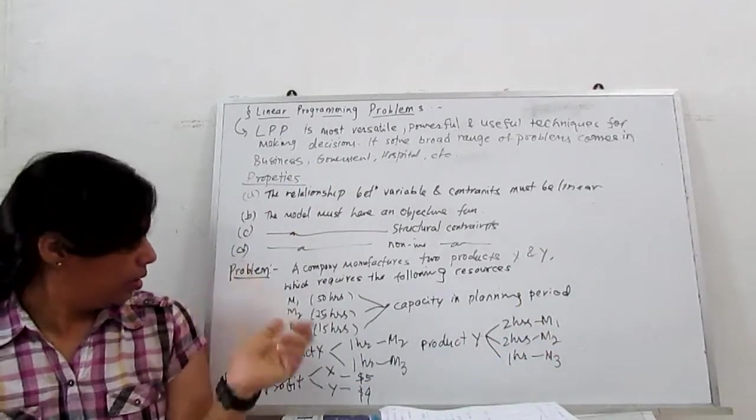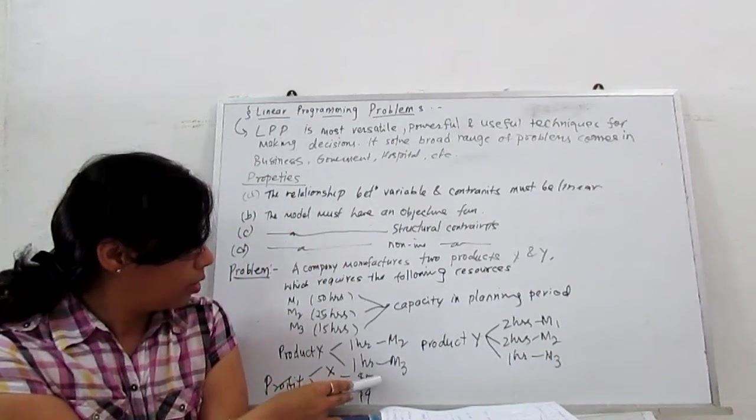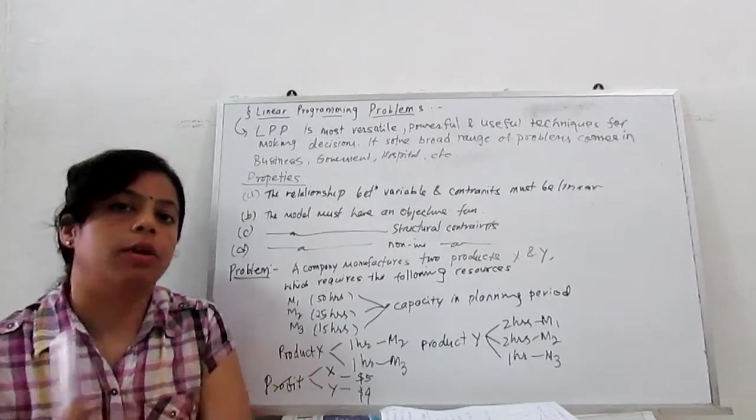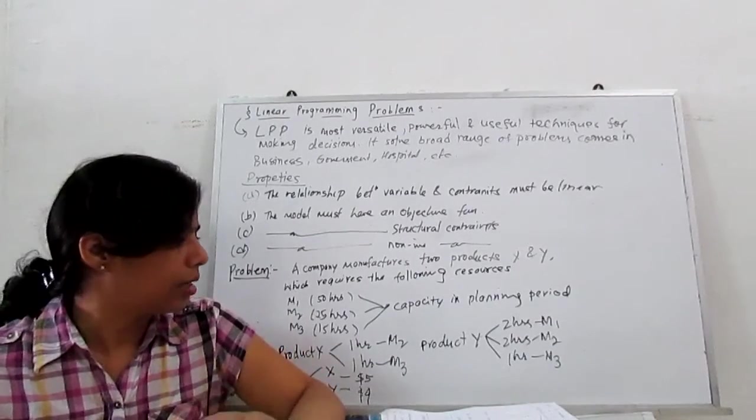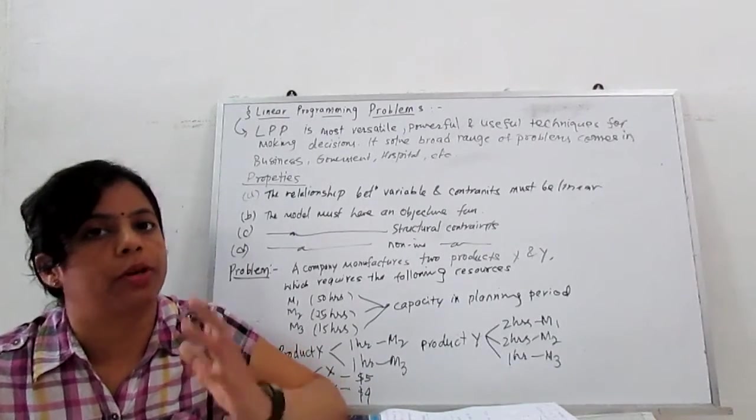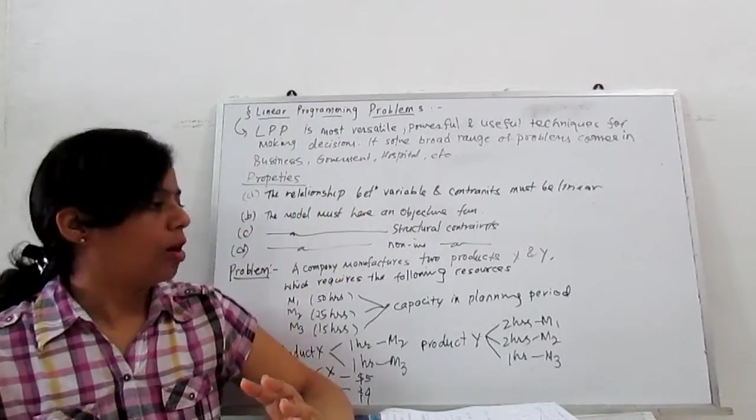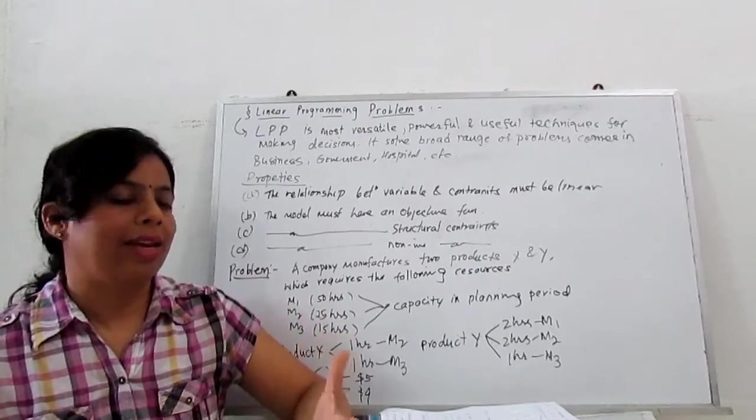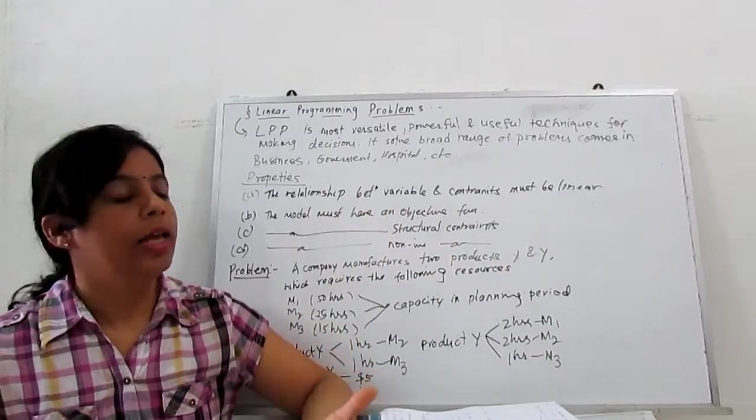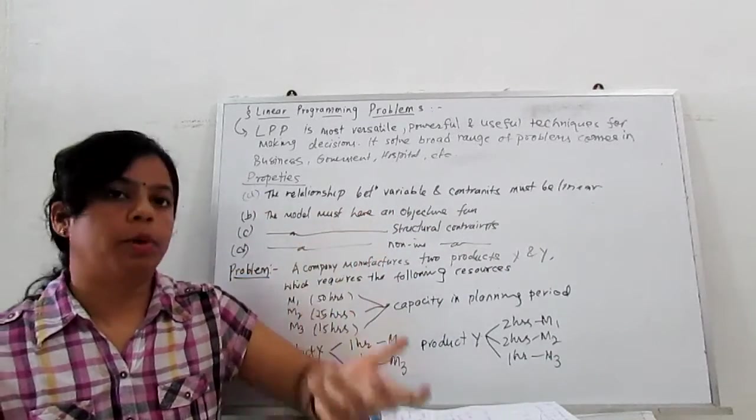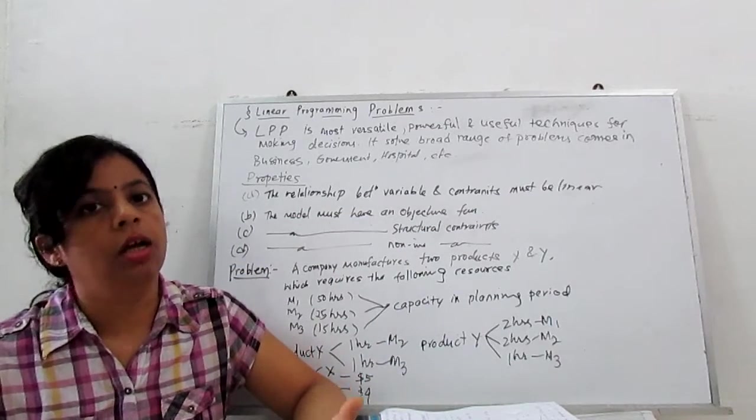The profit for product X is $5 per unit. For Y, they get $4 per unit. Now how to maximize this profit? We formulate this problem in LPP so we can determine how many units of product X and product Y this manufacturer should produce to get the maximum profit. That is the LPP problem.